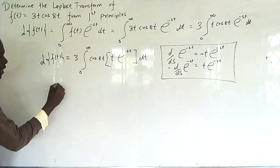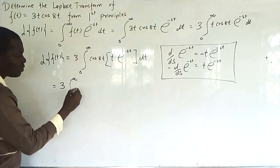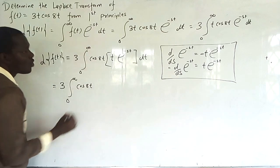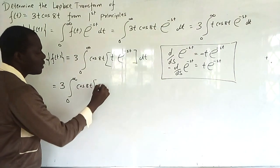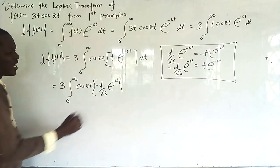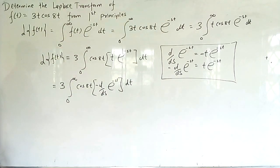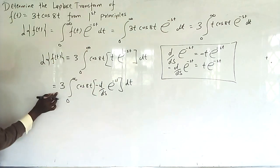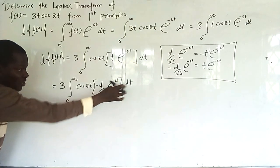So substituting that in, we have 3 times the integral from 0 to infinity of cosh(t) times (-d/ds of e^(-st)) dt. Since -d/ds is with respect to s and not t, it is not affected by the integral — we can take -d/ds outside.